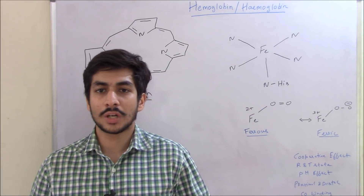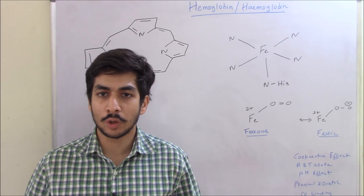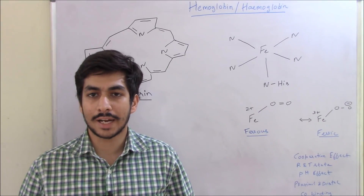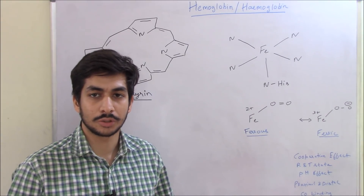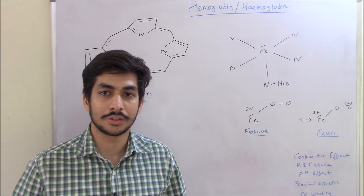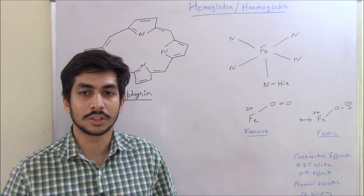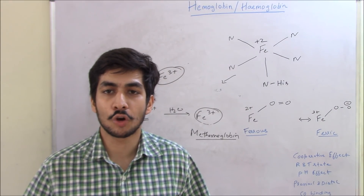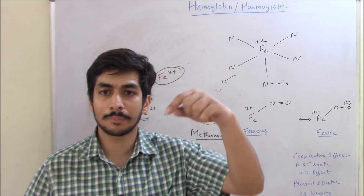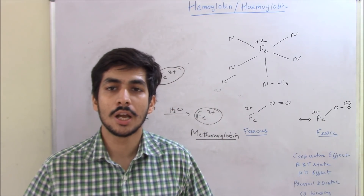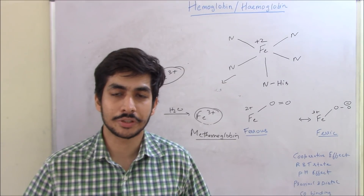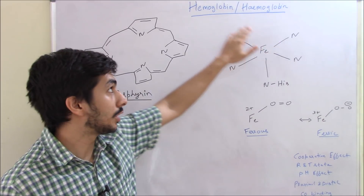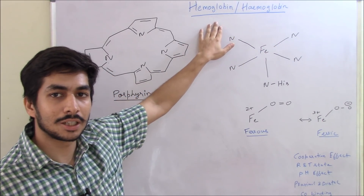In this video you are going to have a comprehensive overview about hemoglobin — the reactions, the structure — and you will have a lot of clarity once you go through this video. I'll also be talking about the applications of the various things that happen to hemoglobin. Hemoglobin has two names: one in British English and one in American English. I'll follow the American English spelling: hemoglobin.